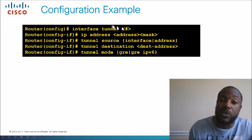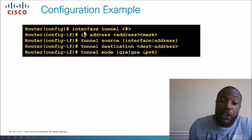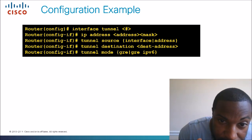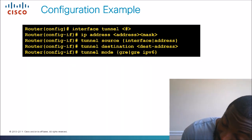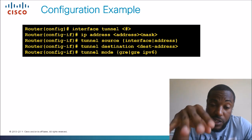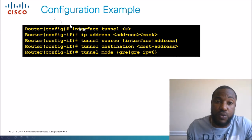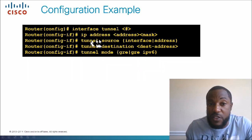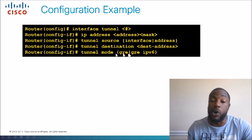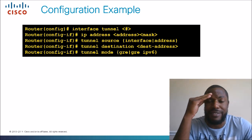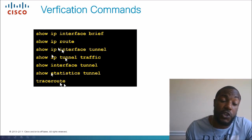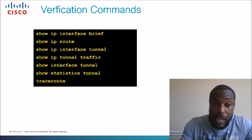Here's an example. You do 'interface tunnel' and give it a number. You assign the IP address — this is what I used to get confused with — you put the private IP address here. The source and destination will be the physical interface IP addresses. Then you do 'tunnel mode' and specify GRE or IPv6, whatever your flavor. We'll also run verification commands when we launch Boston NetSim so we can verify our work.